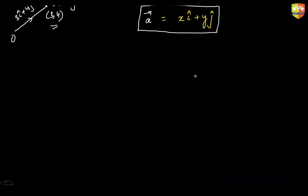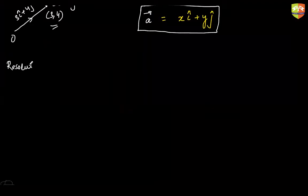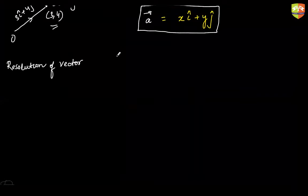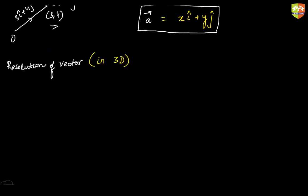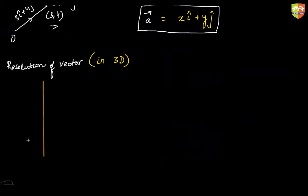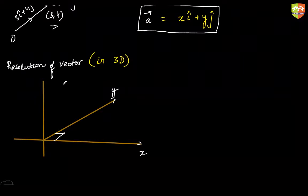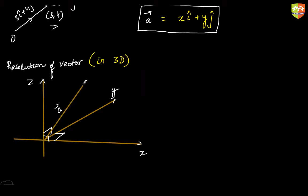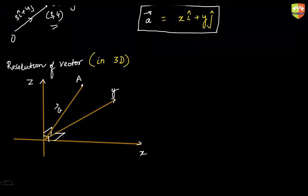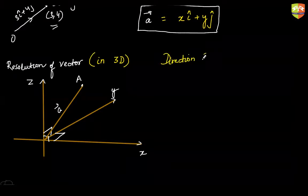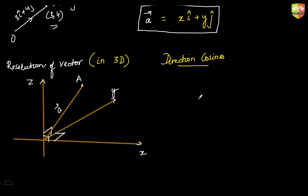Now the problem comes when we try to resolve a vector in 3D. Let's talk about resolution of vectors in 3D. This is my right-handed coordinate system — this is x, this is y, and this is z. Let's say we have a vector like this, pointing to point A. Before we understand resolution in 3D, we have to understand something called direction cosines.